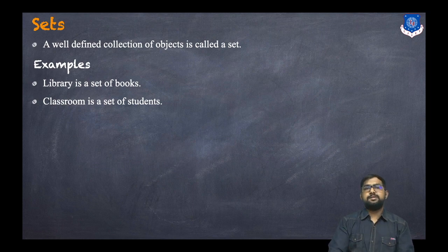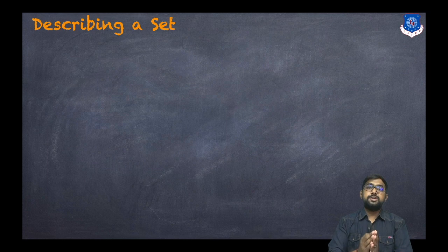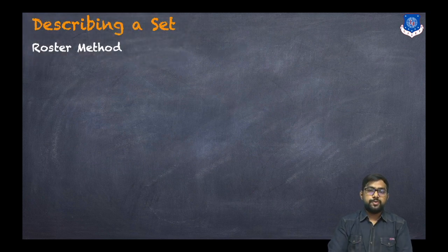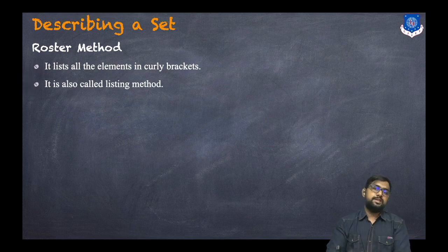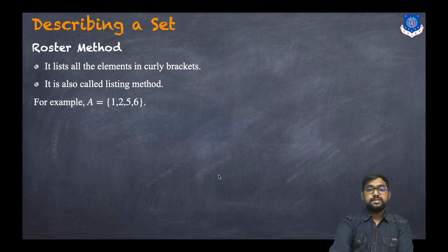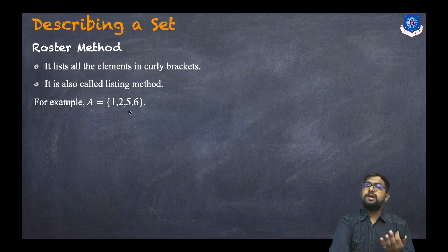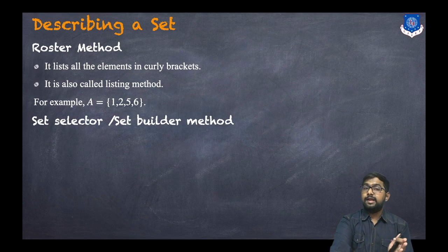There are various methods for describing a set. The first one is the roster method, which lists all the elements in curly brackets. It is also called the listing method — we just list all the elements in curly brackets. For example, A = {1, 2, 5, 6}.